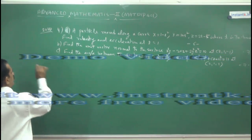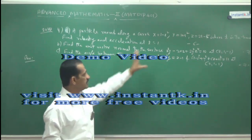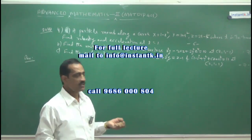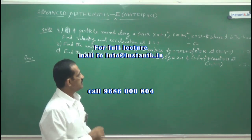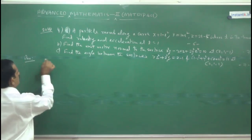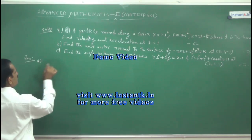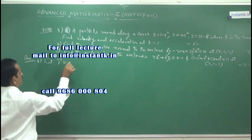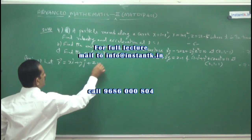First, you should know how to answer the first question: a particle moves along a curve, and you have to find only velocity and acceleration. Velocity means you differentiate the position vector with respect to t. So first write: when a problem of this type is given, what is the position vector? The position vector of the curve: let vector r = x·î + y·ĵ + z·k̂.